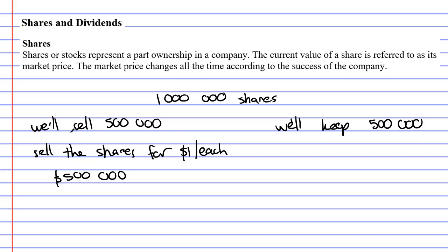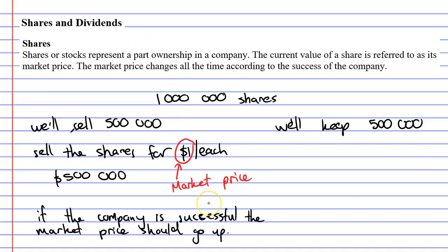Now the value of the shares is actually referred to as the market price. So at this particular time, the market price of the shares is $1. The market price can change over time, however. If the company is successful, hopefully the market price will go up. In some years' time, the market price might become, let's say, $10.